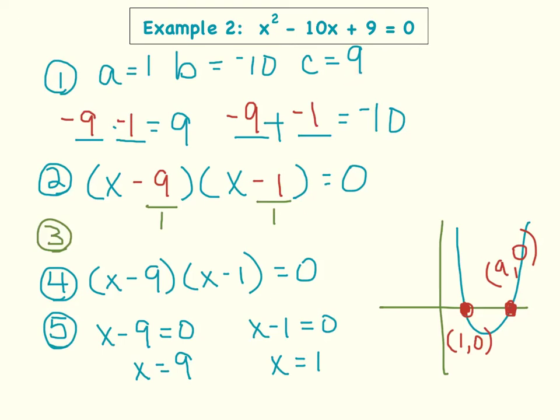So now we are ready to find the factors of a times c, which will add up to b. So the factors of a times c, well a times c would be 1 times 9. So the factors of 9, that add up to negative 10. There are only two pairs of factors for 9. It would either be 3 times 3, or 9 times 1. And so I realized 3 plus 3, or 3 minus 3, would not give me negative 10. But 9 plus 1 gives me positive 10. Therefore, negative 9 plus negative 1 equals negative 10. And negative 9 times negative 1 does equal positive 9.